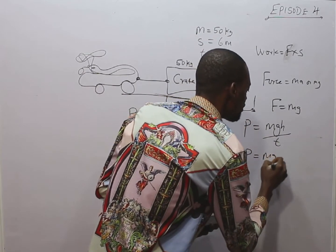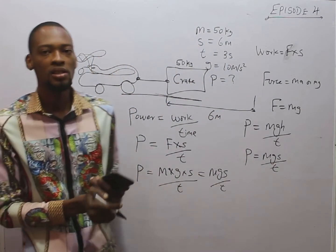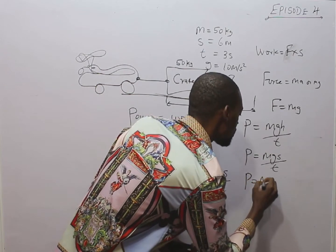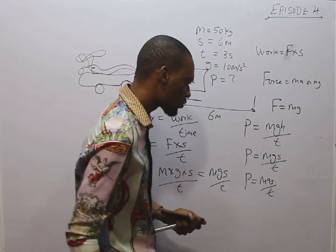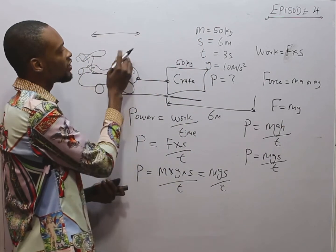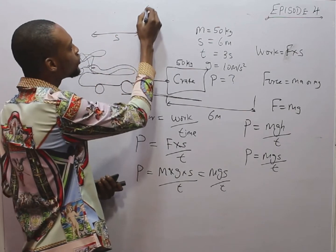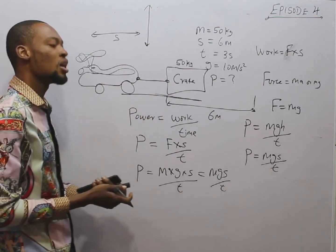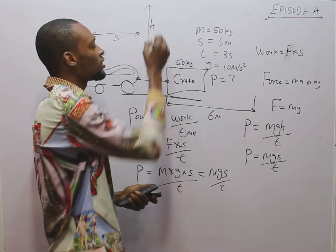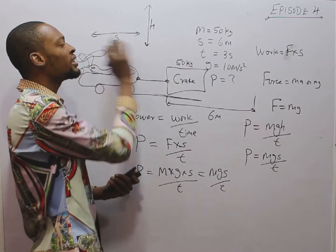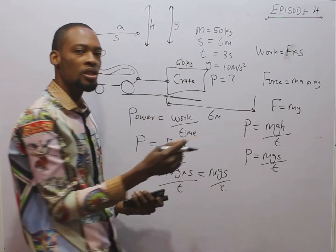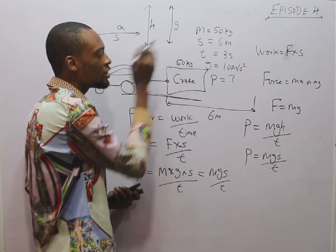Any time you are given mass, distance, and time, and asked to find power, you simply say P = mgs/t. Note the difference between h and s: if you move horizontally, you cover distance s; if you move vertically, that vertical distance is regarded as height h. When moving horizontally you use acceleration a, but going upward the acceleration acting against you is acceleration due to gravity g.